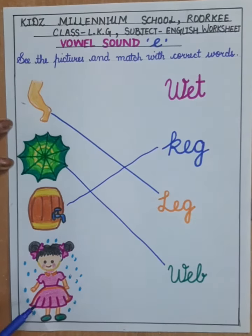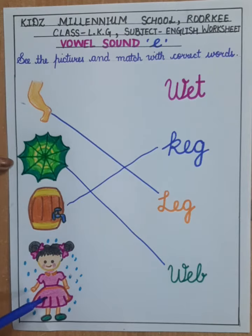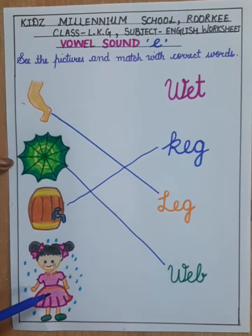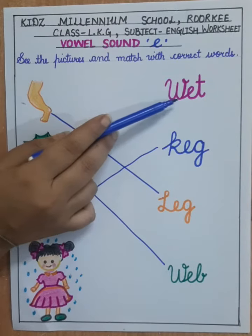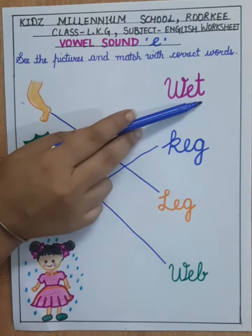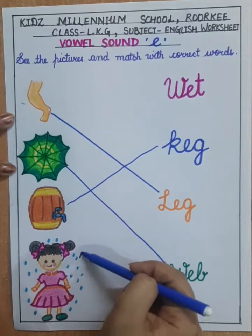And last is wet. Wet means bheega hua. W-E-T. Wet. So match it here.